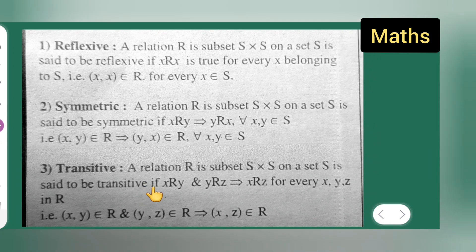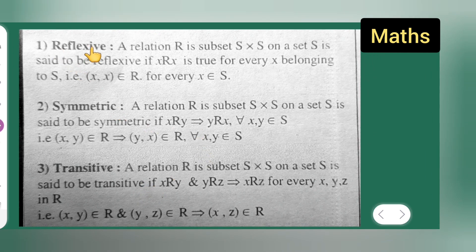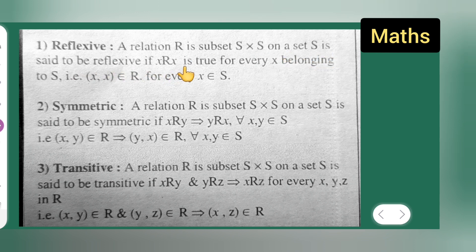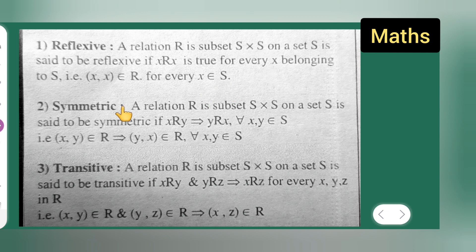The definition of reflexive: a relation R ⊆ S×S on a set S is said to be reflexive if X is related to X is true for every X belonging to S. That is, (x,x) ∈ R for every x ∈ S.